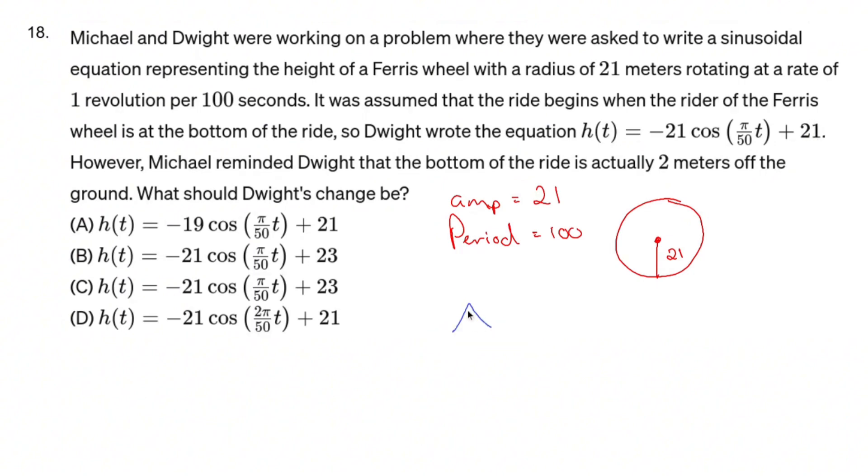Okay, let's see the picture that Dwight came up with and see if there's any issues. So midline 21. Negative 21 cosine gives us that amplitude of 21. So we're up here at 42. We're down here at zero.